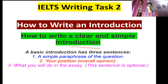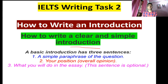In IELTS Task 2, you have to write an essay of 250 words within 40 minutes. That contains six band scores of your total IELTS writing score. In IELTS writing, we divide our essay into four paragraphs: introduction, body paragraph one, body paragraph two, and conclusion.